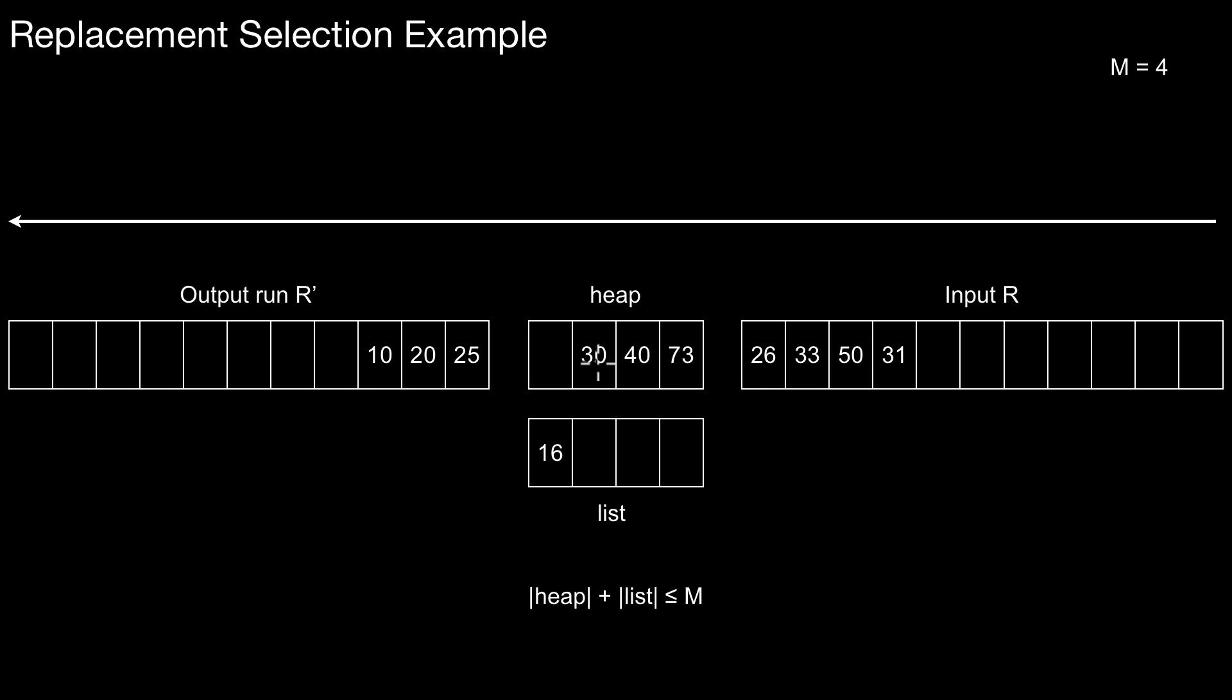So next thing to do is remove the top element again, which is 30. Let's write it to the output run R'. Now again there is room available for another element. That is 26, which again is strictly smaller than 30. So we have to put it to the list as well. Draw the next element from the heap, 40. Write it here, room available. Draw 33, which is again strictly smaller than 40. So next thing to do is write 73 to the output. Draw the next element, which is 50, again strictly smaller than 73. So this has to be sent to the list. Now we are in a situation where the heap has a size of zero elements and the list has a size of four elements, M elements.